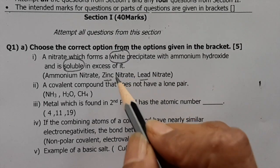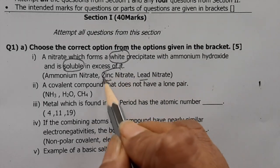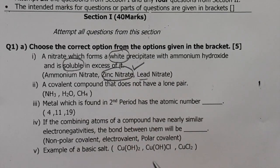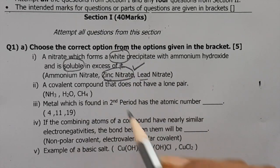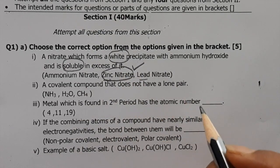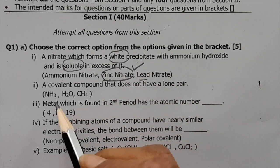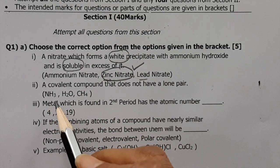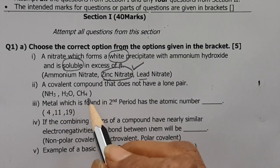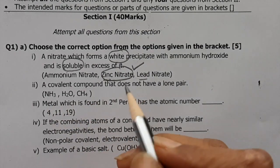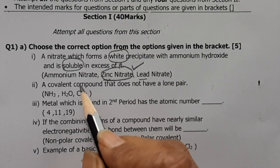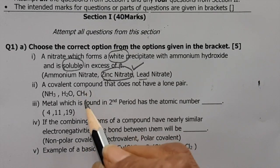The covalent compound that does not have a lone pair: NH₃ has a lone pair, H₂O has two, but CH₄ does not have any because carbon forms four single bonds. So CH₄ is the answer.